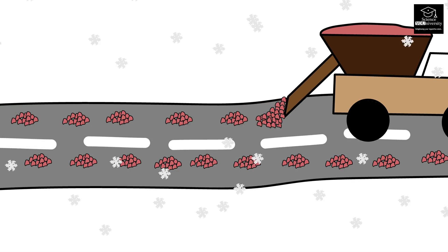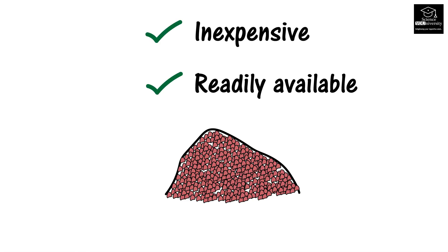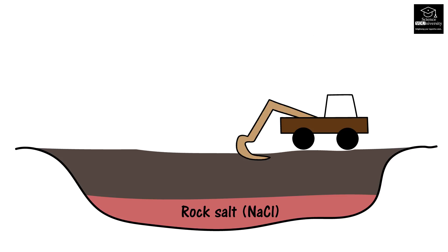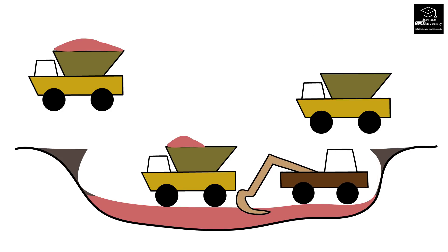Rock salt is mostly used to melt ice since it's less expensive and readily available. Rock salt, which is formed by the evaporation of ancient seas, is mined from underground as a dry crystal salt.